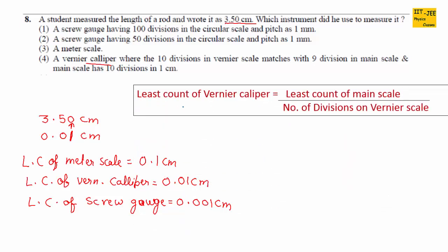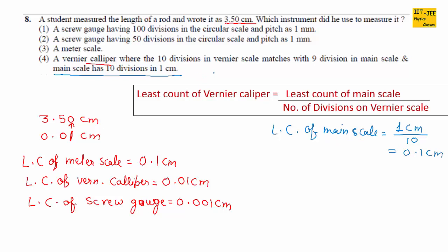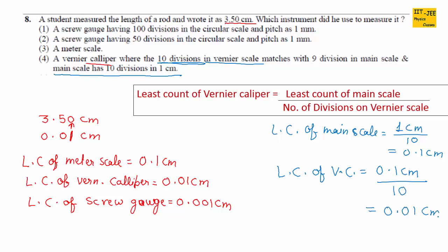Now let's verify using the formula: least count of vernier caliper = least count of main scale divided by number of divisions on vernier scale. It is given that the main scale has 10 divisions in 1 centimeter, so the least count of the main scale is 0.1 centimeter. Dividing by 10 vernier divisions gives 0.01 centimeter. So the least count of the vernier caliper is 0.01 centimeter, confirming the right choice is Choice 4.